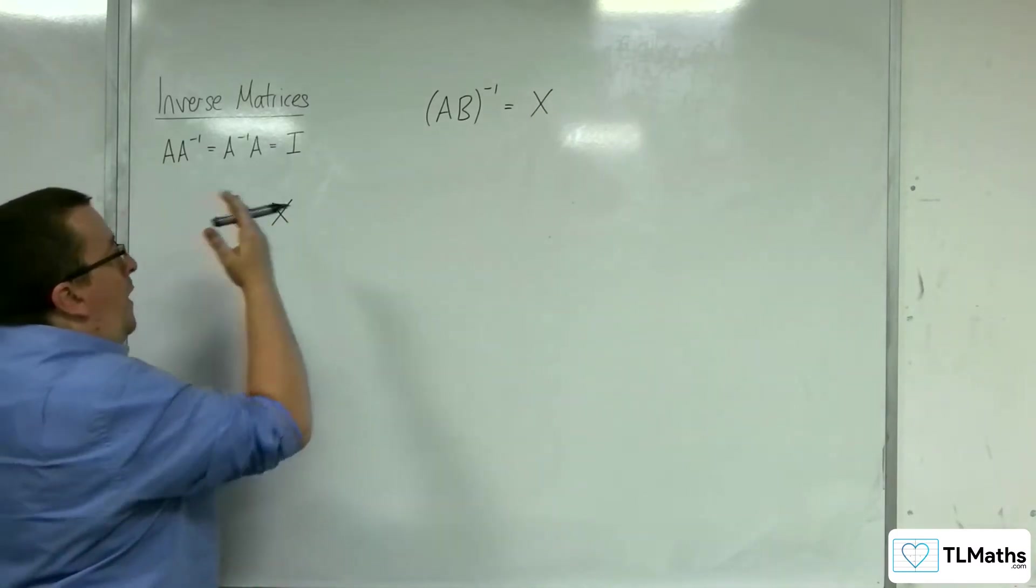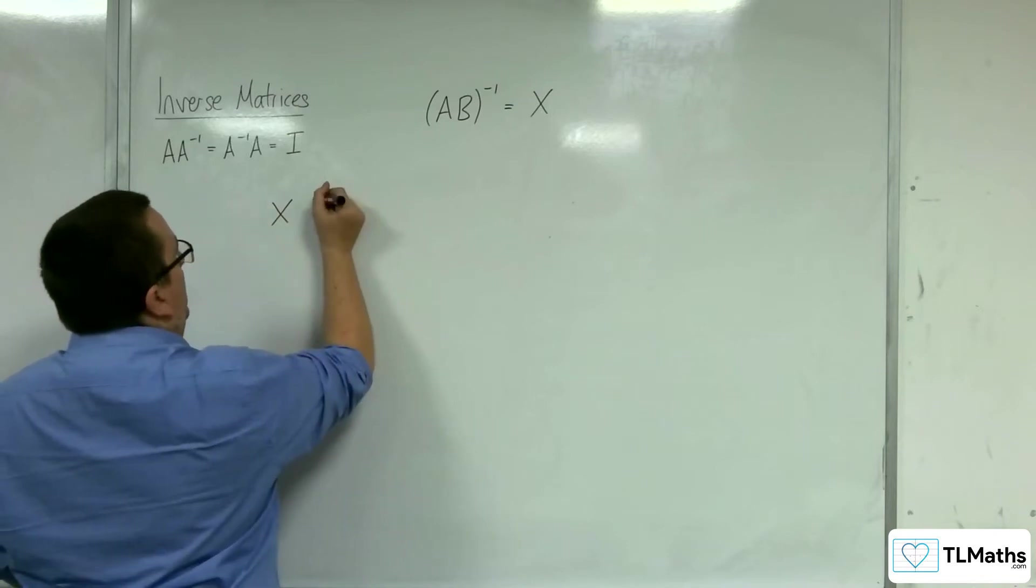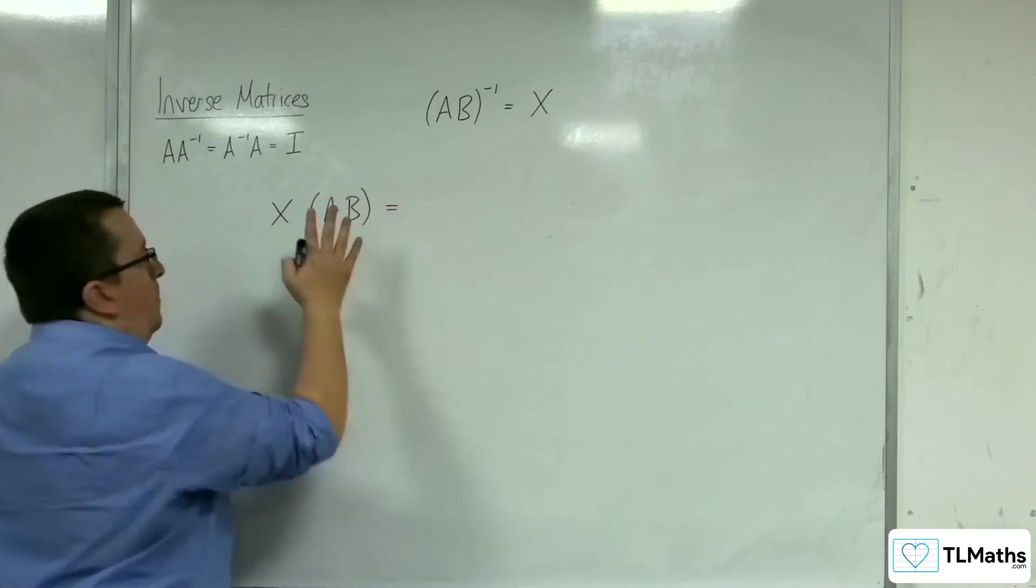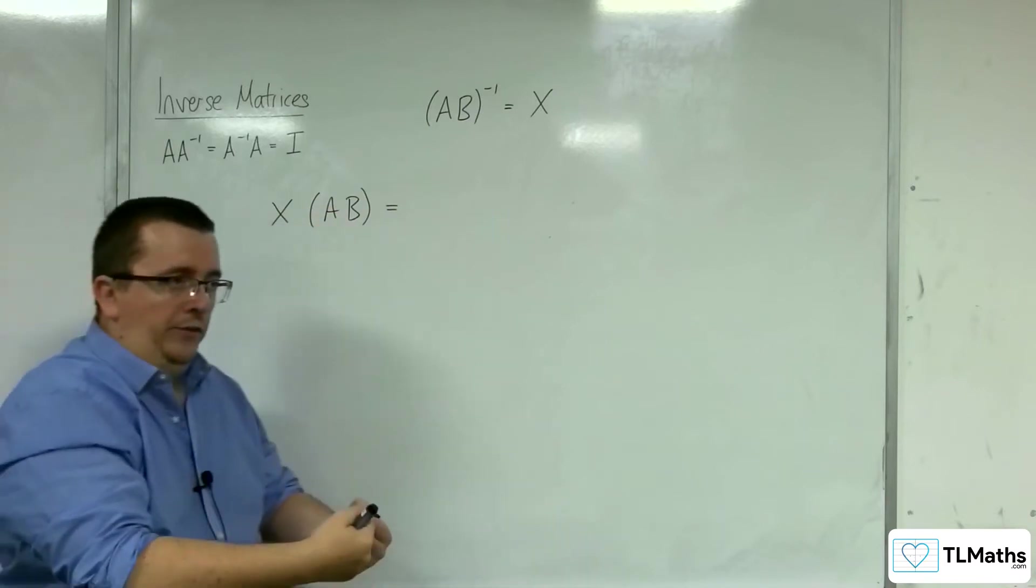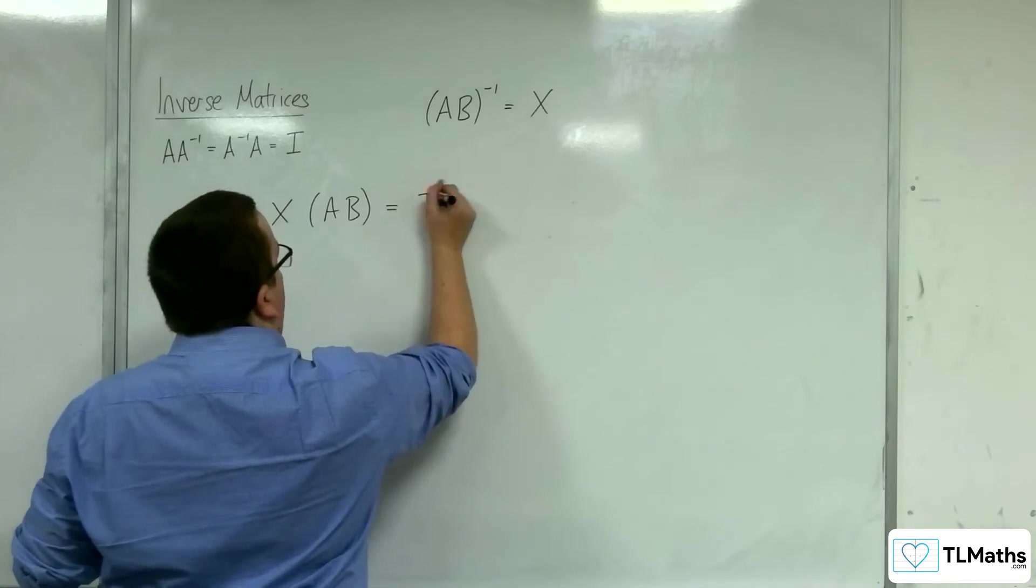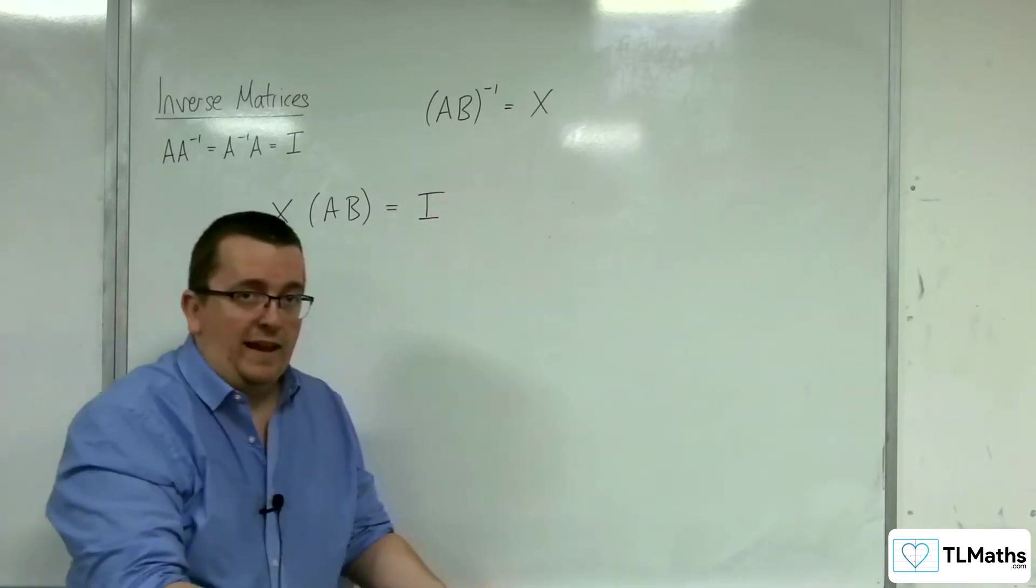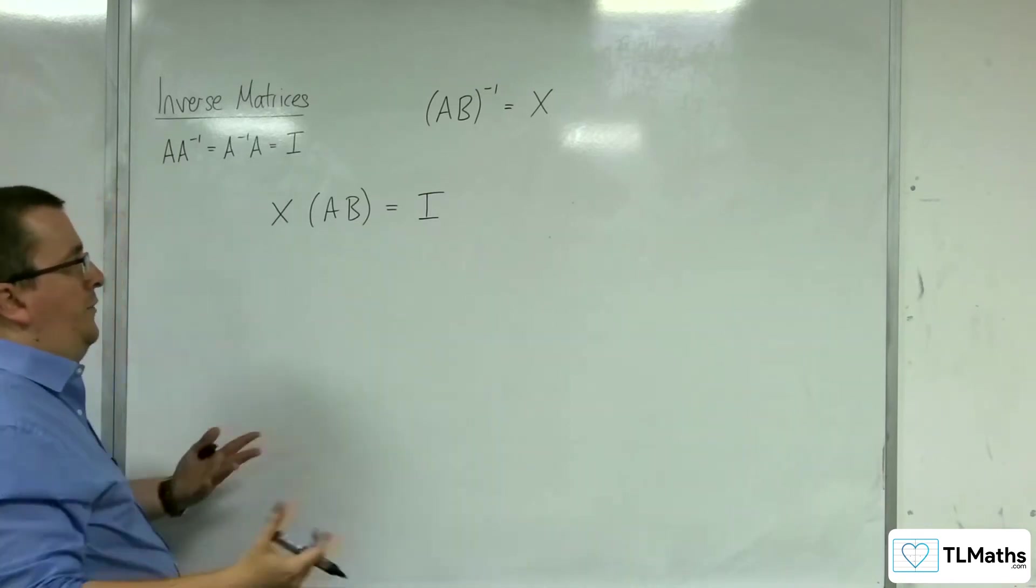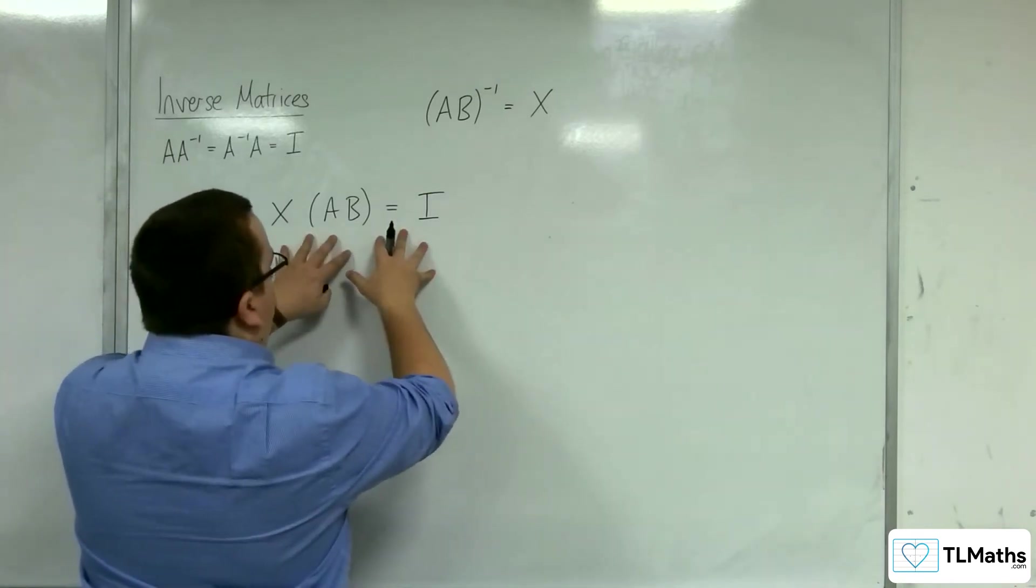So when I have X and I've applied X after I've applied AB, so I've applied AB first and then I apply X, that must get me the identity matrix because X inverts AB. So what I'm going to do is I'm going to work with this equation.